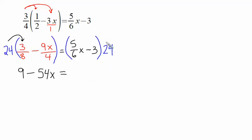On the right-hand side, we have to distribute the 24 as well. 24 divided by 6 is 4. 4 times 5 is 20, so that will be a 20x. And 24 times a negative 3 is going to be negative 72.